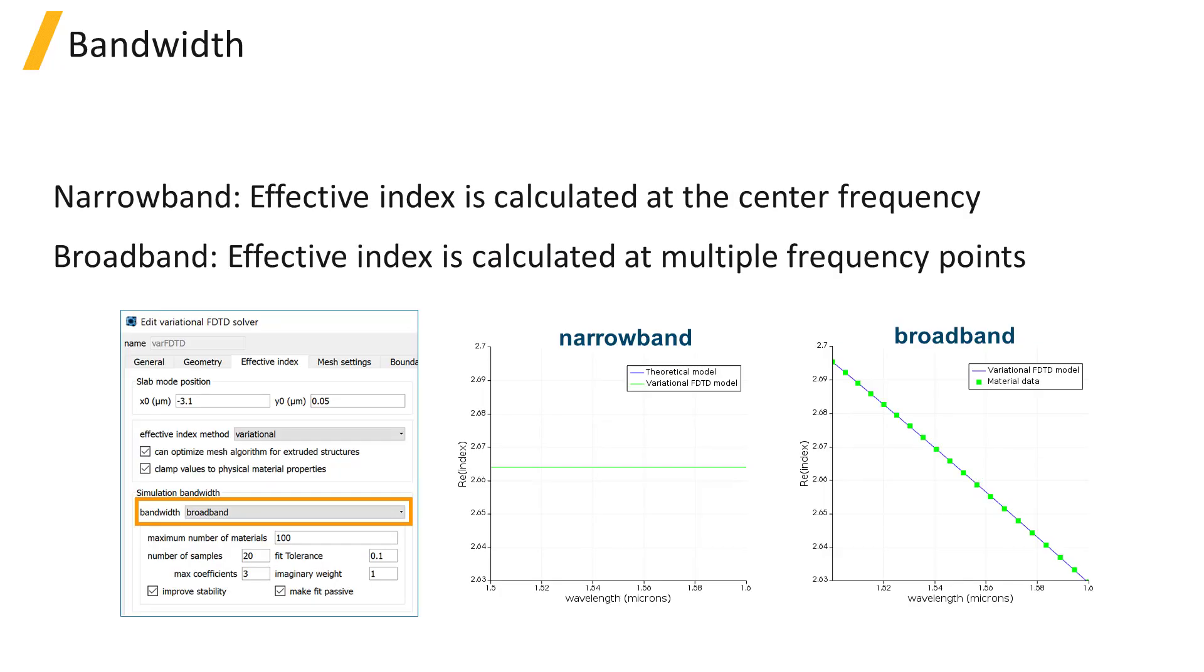If the bandwidth in the VAR FDTD solver region's effective index tab is set to narrowband, the effective index is calculated at the center frequency of the simulation, so the simulated properties will only be correct at the center frequency.